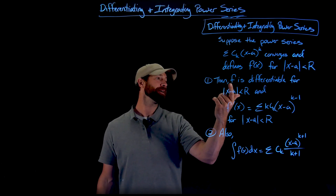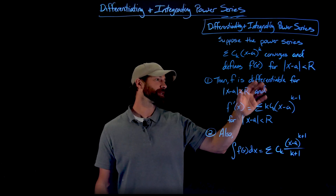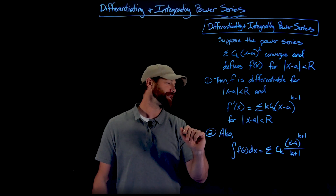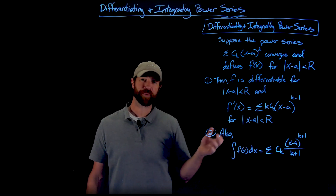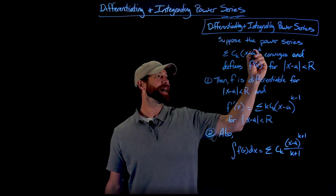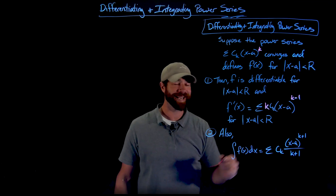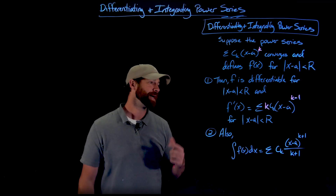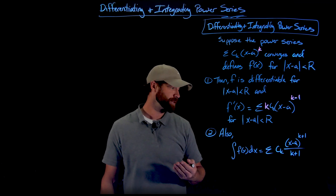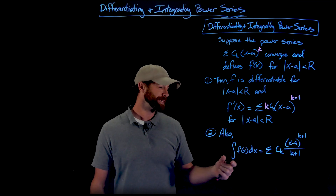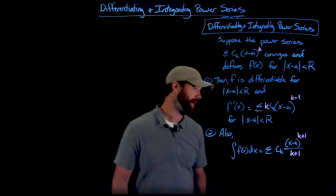Given that setup, we know that f is differentiable — which means it's also continuous, as we recall from differential calculus. So f is differentiable on the interval defined by this absolute value inequality. The derivative of f is found by simply taking the derivative of each term: we bring the exponent k down and reduce the exponent by one. The integration is exactly the same but the opposite — the integral representation is the anti-power rule, adding one to the exponent and dividing by that new exponent.